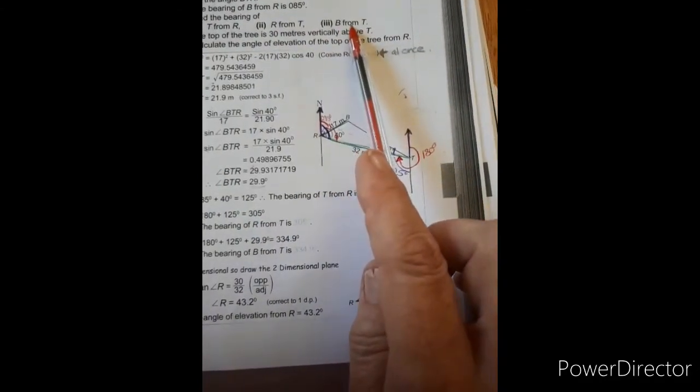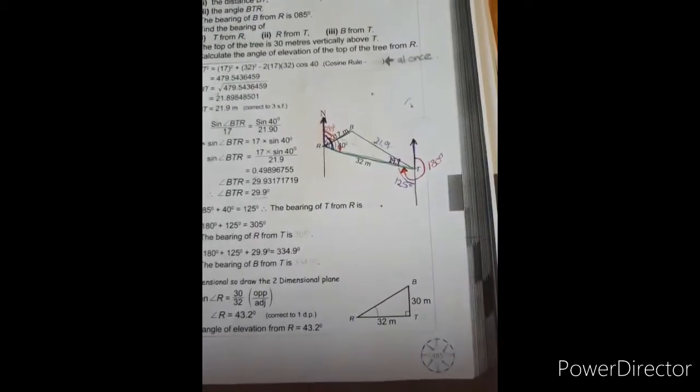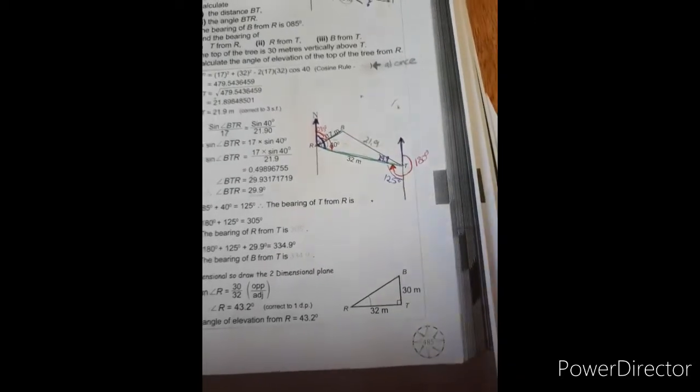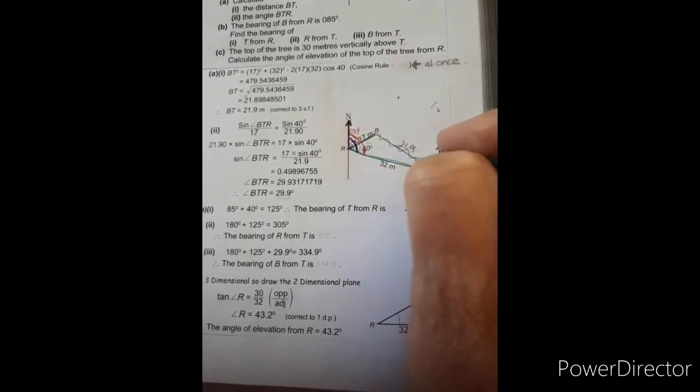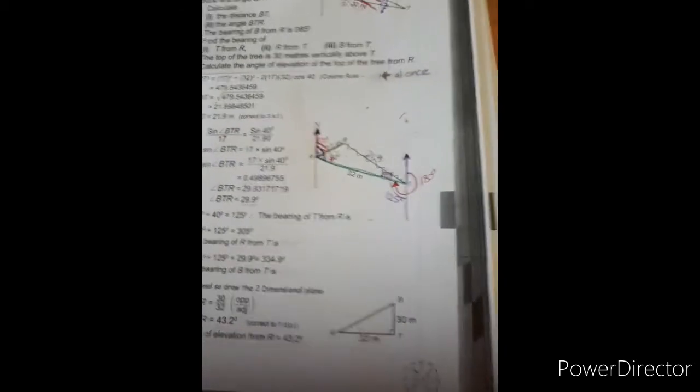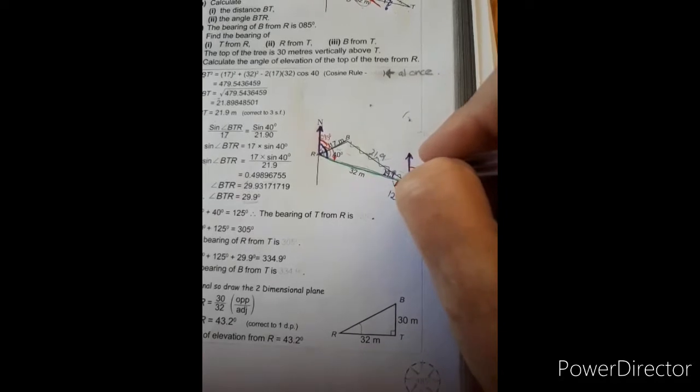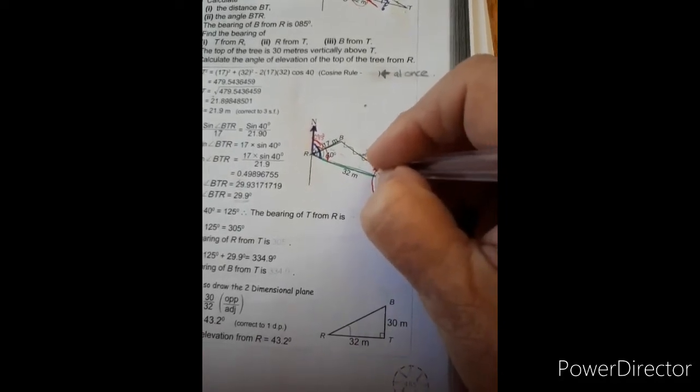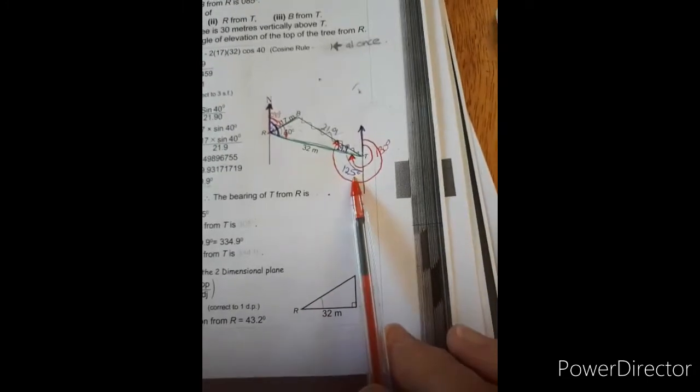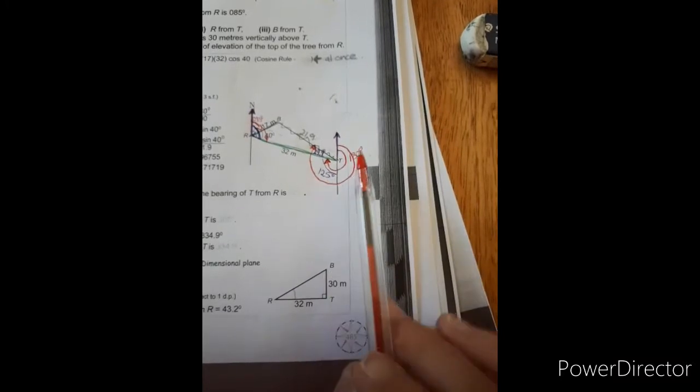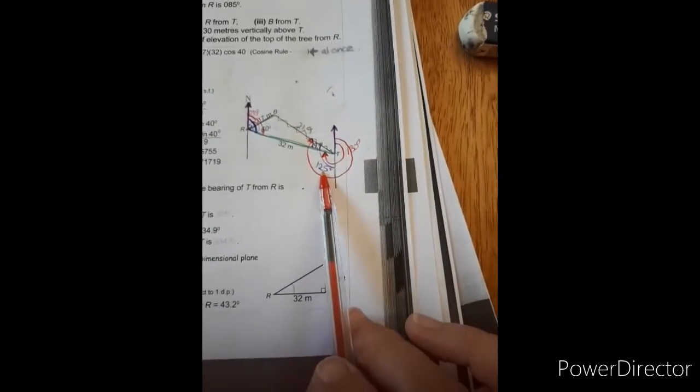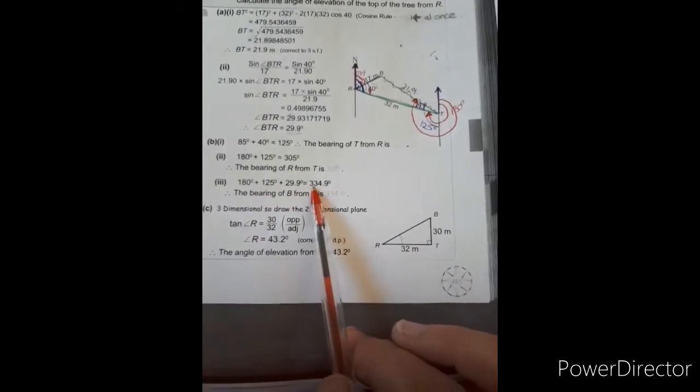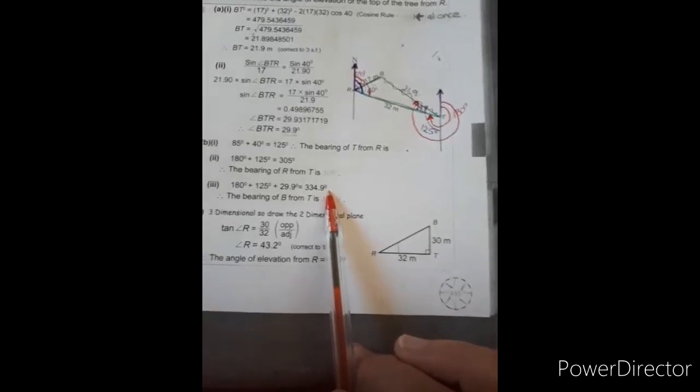And then lastly, they're asking the bearing of B from T. That's where my north line is. But B from T, we are now talking about this journey line. So now the angle that is asked starts at the north line. We go all the way clockwise until we get to the journey line. And this is now, because you've written in all the information, it's really easy to see. We've got the 180, and the 125, and the 29.9. And if we add all of these, we get 334.9 degrees.